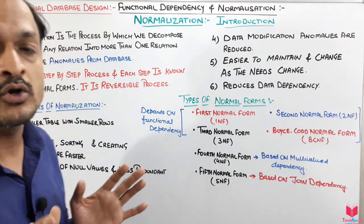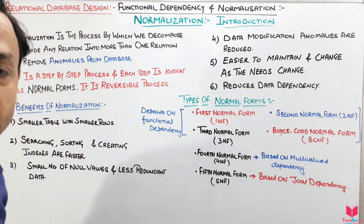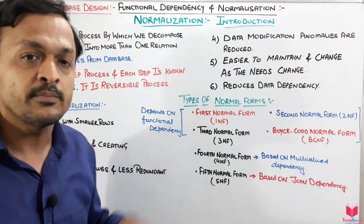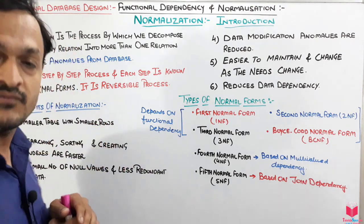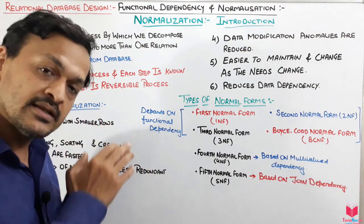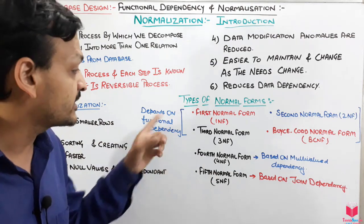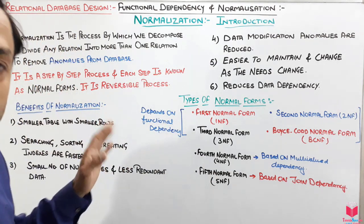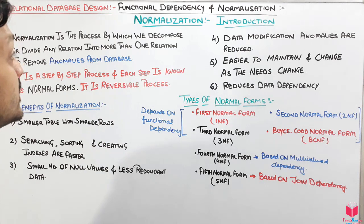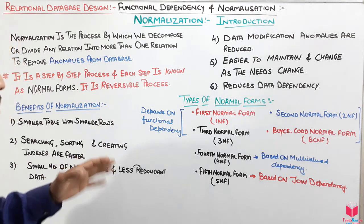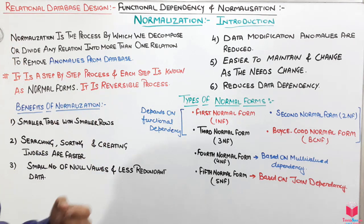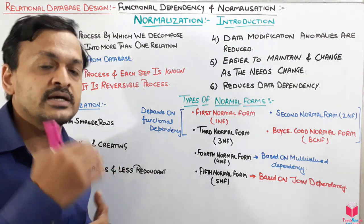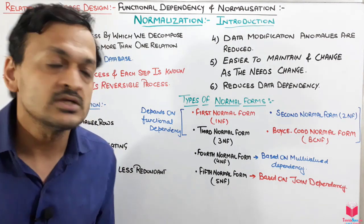We are not going to study all dependencies at once and then do all normal forms at once. Instead, we will study each dependency first and then apply it to its corresponding normal form. That will be our procedure going forward. This is all about the normalization introduction.